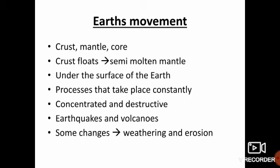You know that Earth has three main layers: crust, mantle, and core. The Earth's crust floats over the semi-molten mantle. Continuous movements take place on and under the surface of the Earth. The changes that occur on the Earth's surface are also due to the processes that take place constantly under the surface of the Earth.